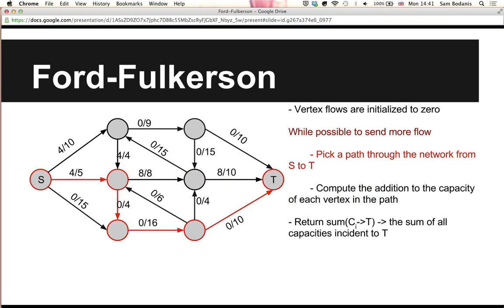So pick a new path, write down all the nodes, figure out what the amount to push is. Here it's only 1 because we only have one space left here. Update and continue. Now I pick another path through, this one is very simple again, so continue.